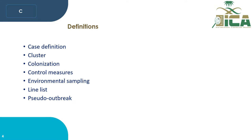Line list is a list established by infection control personnel to assist and guide an outbreak investigation by documenting and organizing demographic data, clinical risk factors, and host or other contributing factors to the outbreak.